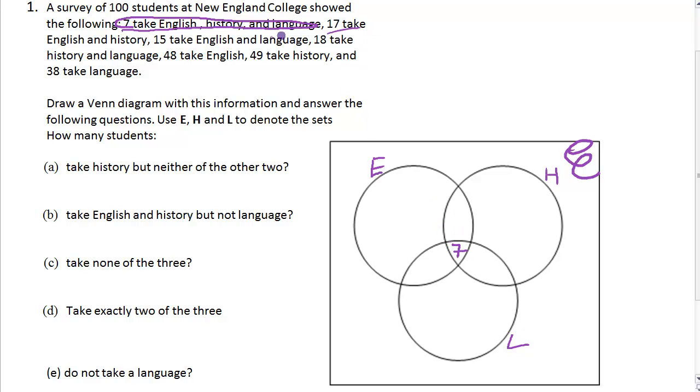Then we've got 17 take English and History. This overlapping group has 17 in it. We need to take 7 off because all three has 7, so that leaves 10 that are only English and History.